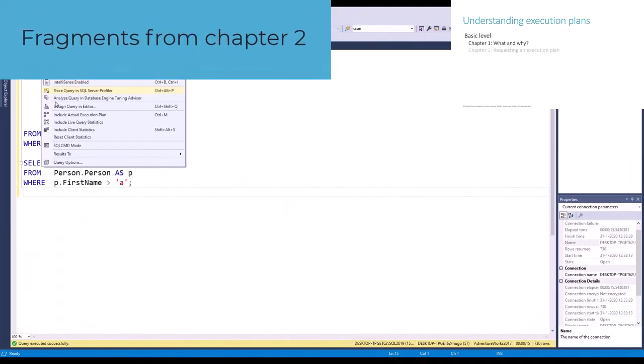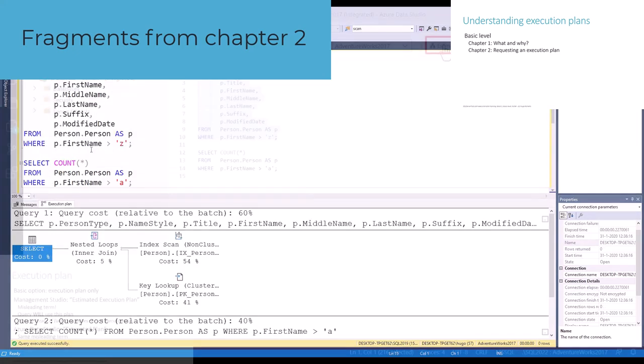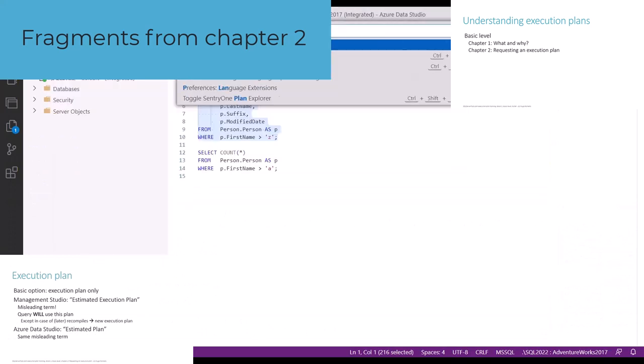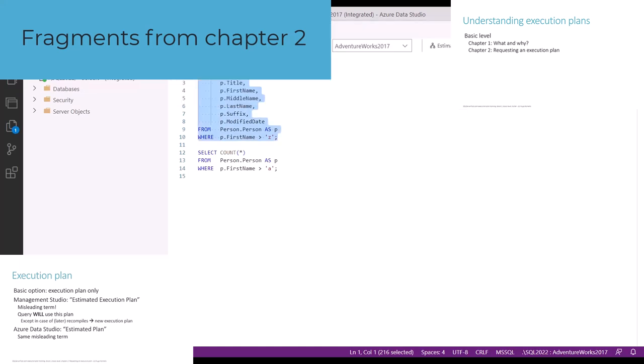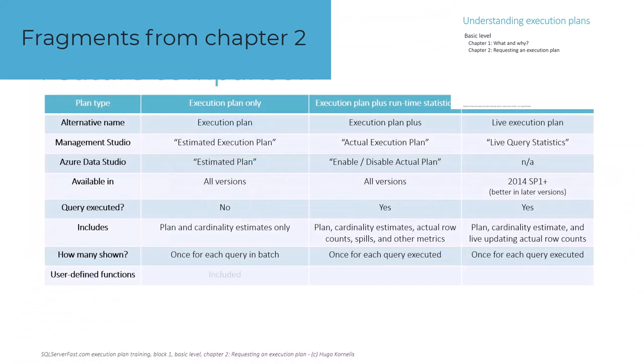The second chapter explains how to obtain the three types of execution plan. Execution plan only, also known as estimated plan. Execution plan with runtime statistics, also known as actual plan. And the live execution plan. We'll also talk about the pros and cons of each of these three types.